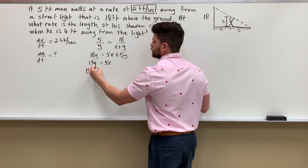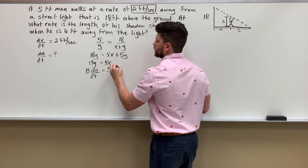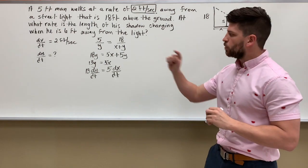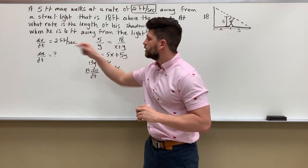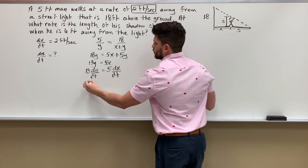So now I'm going to take the derivative of both sides. So that's going to give me 13 dy/dt equals 5 times dx/dt. And we're about done because I want to find dy/dt and I know dx/dt.